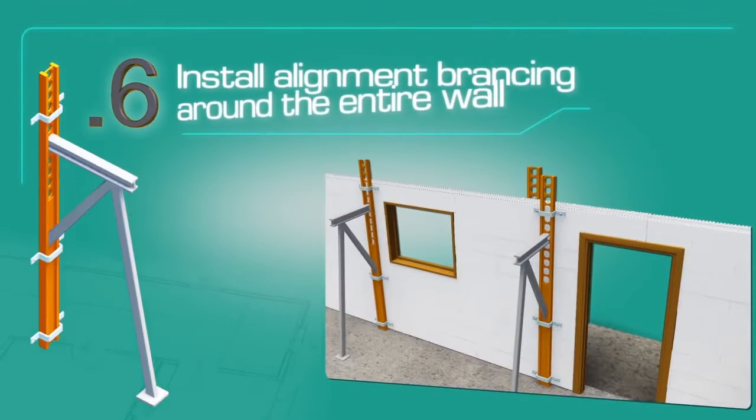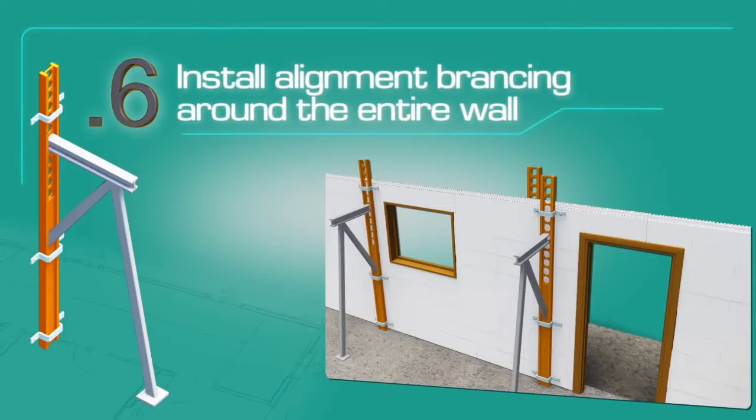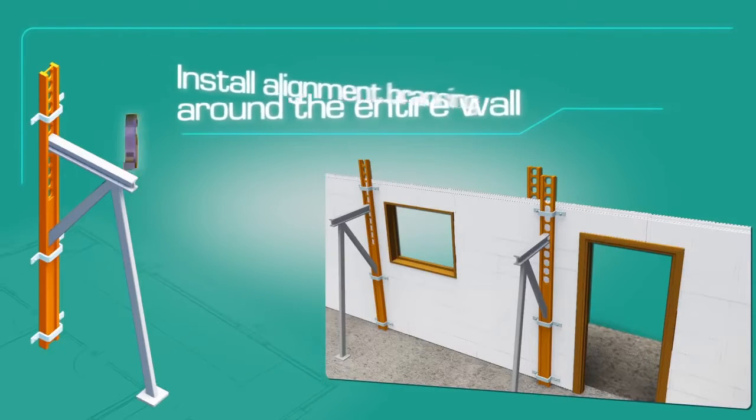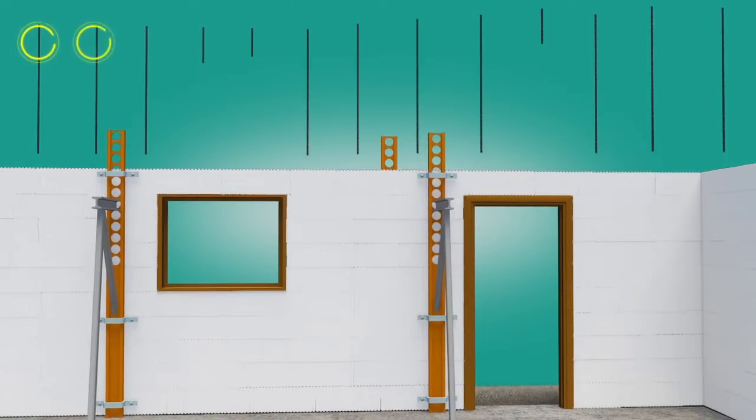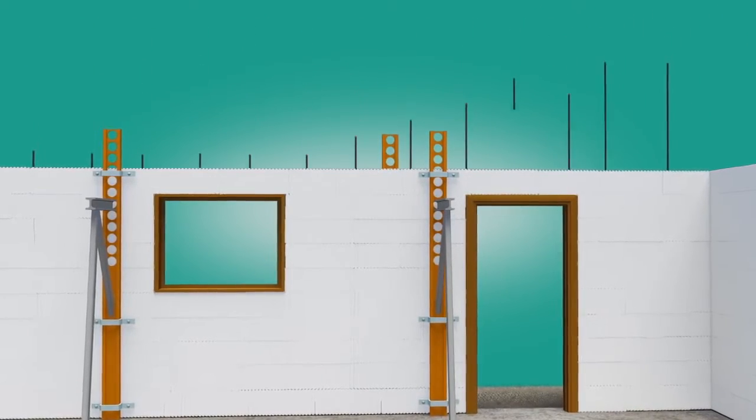Install alignment bracing around the entire wall of the structure to ensure that the walls are straight and plumb and to enable alignment adjustment before and during the pour. The bracing also serves the dual purpose of providing a secure framework to support scaffolding planks once five courses have been stacked.